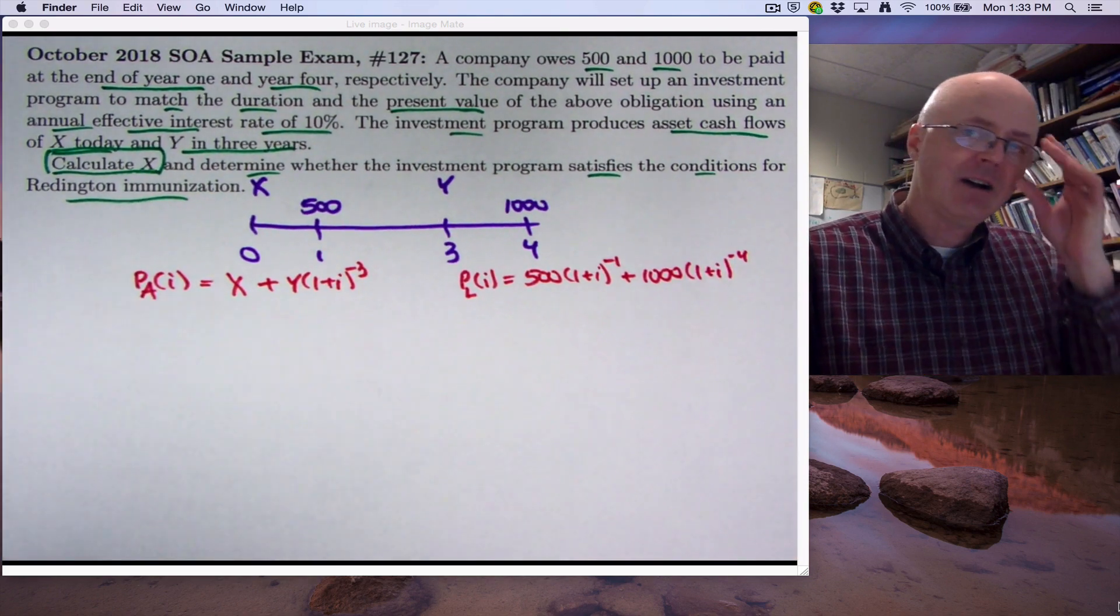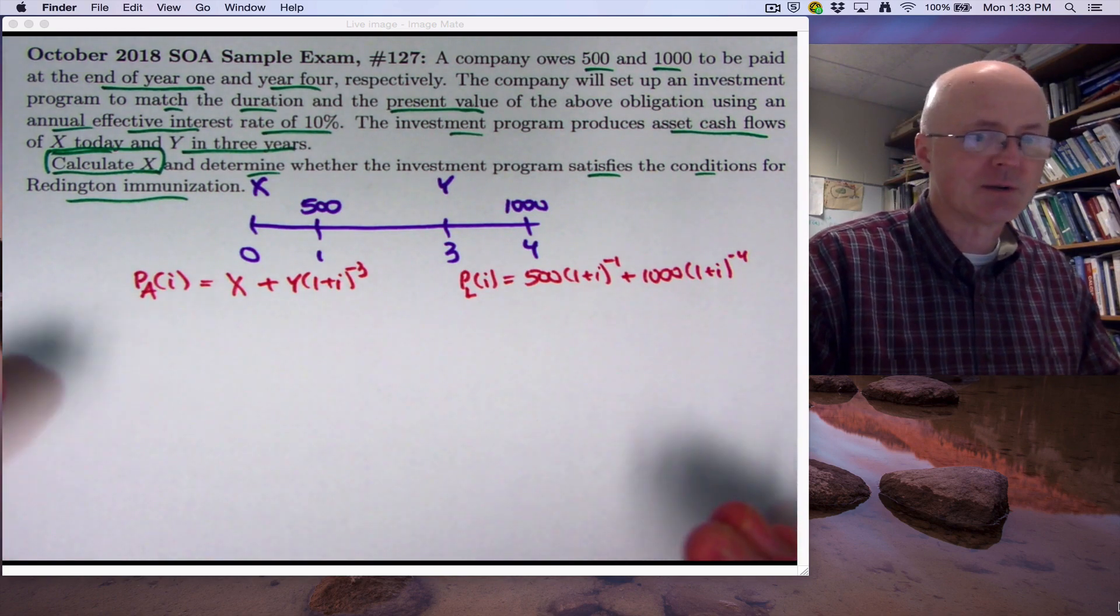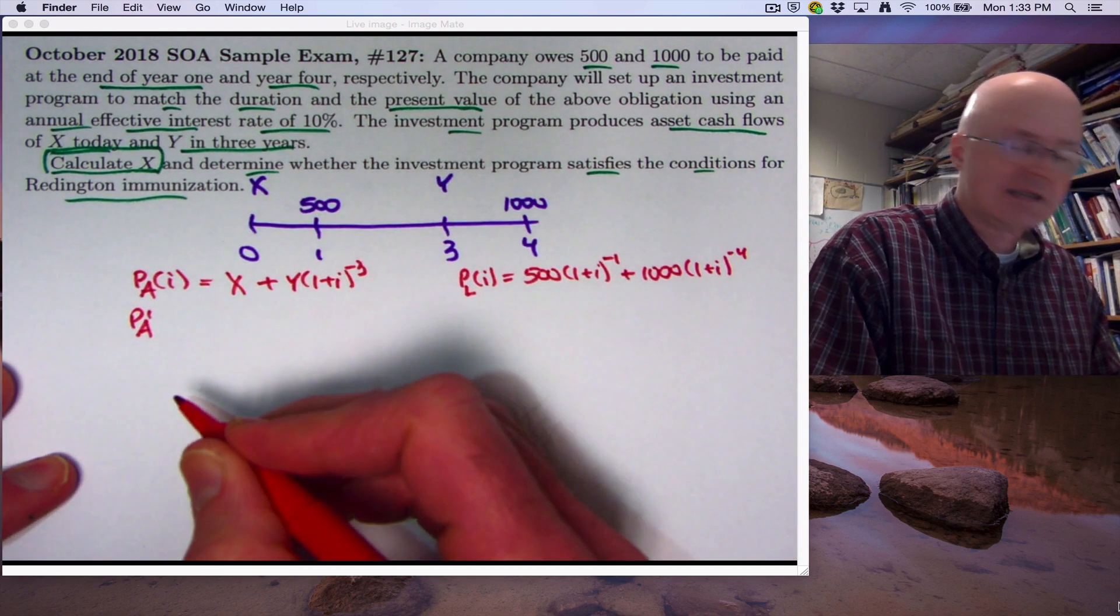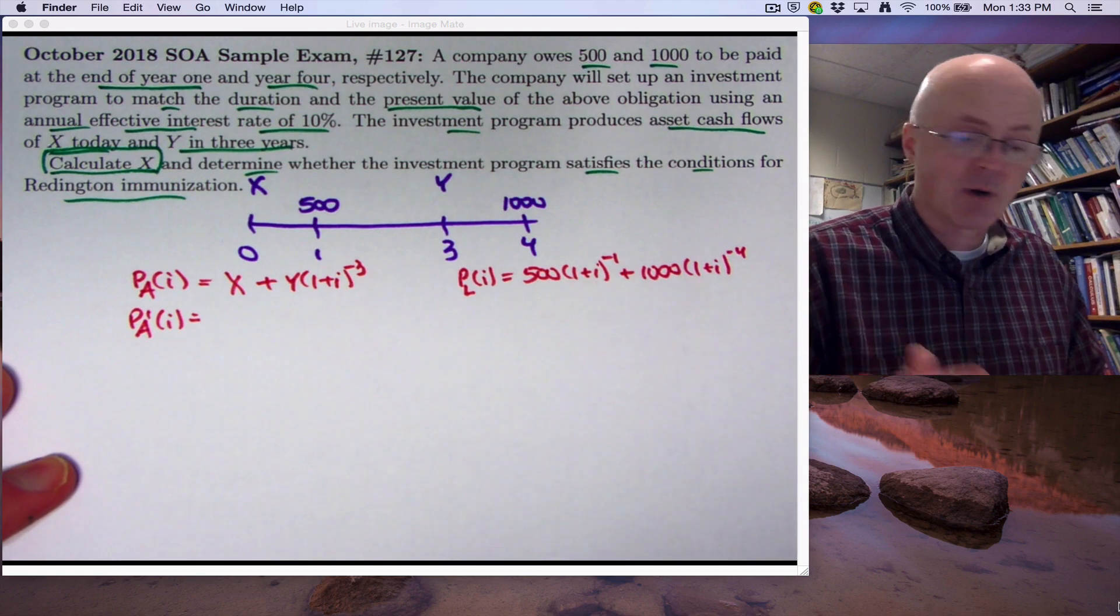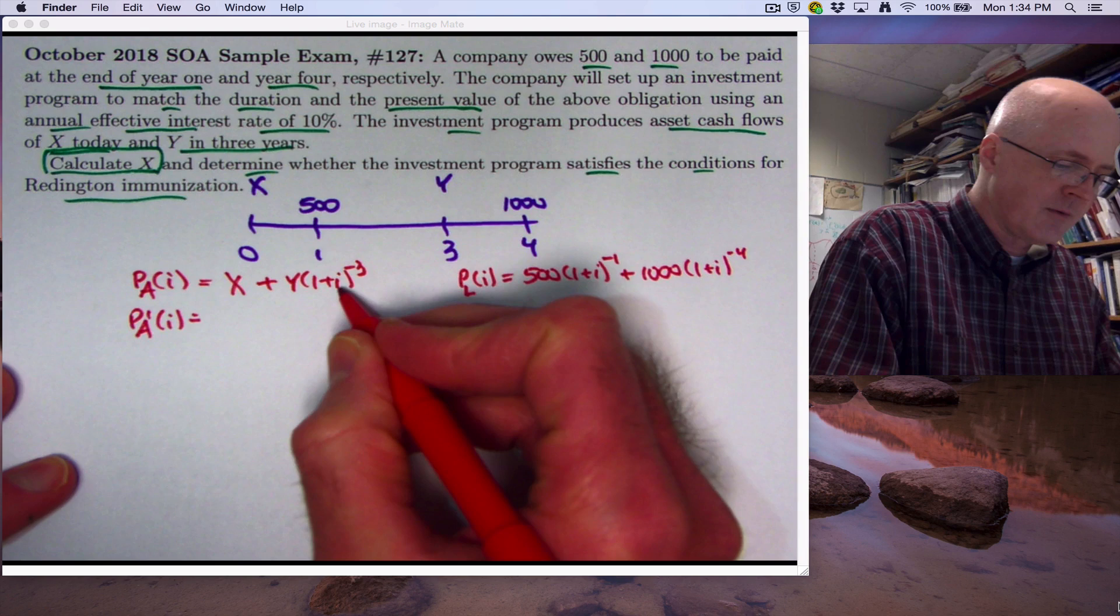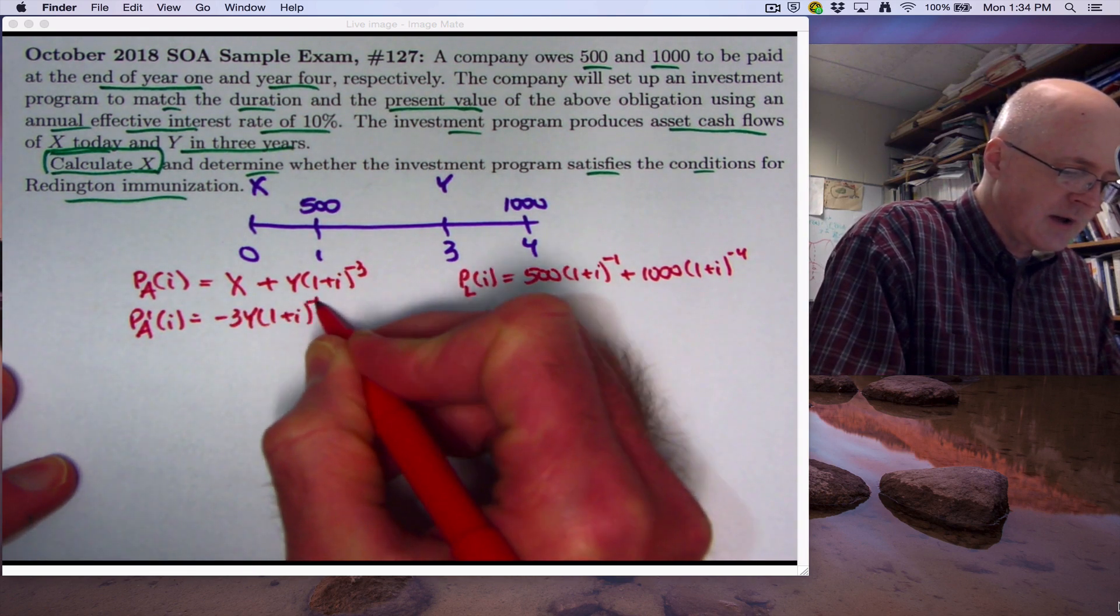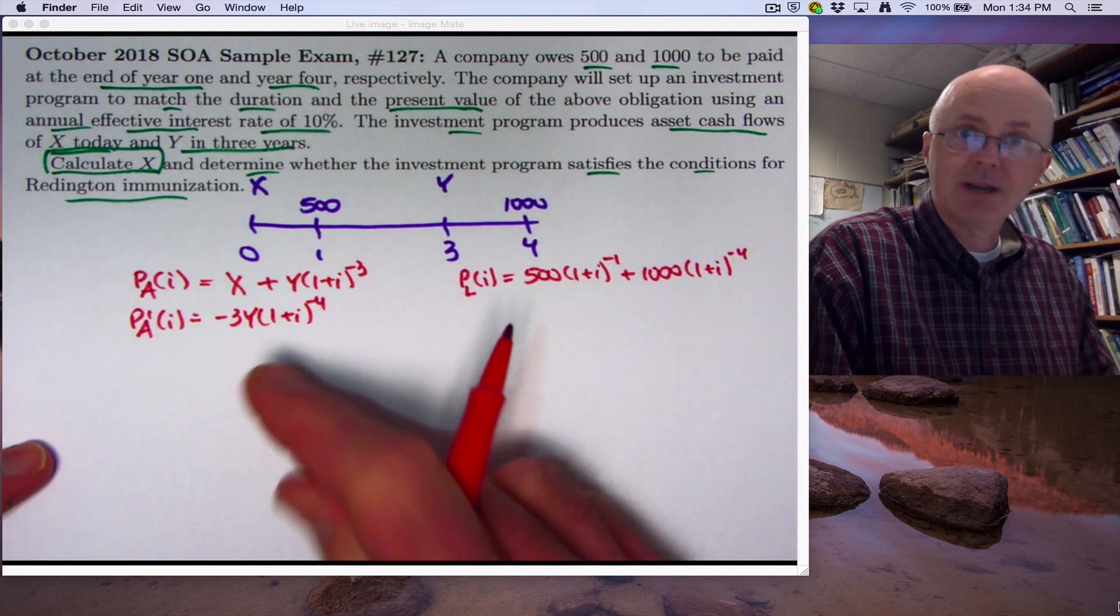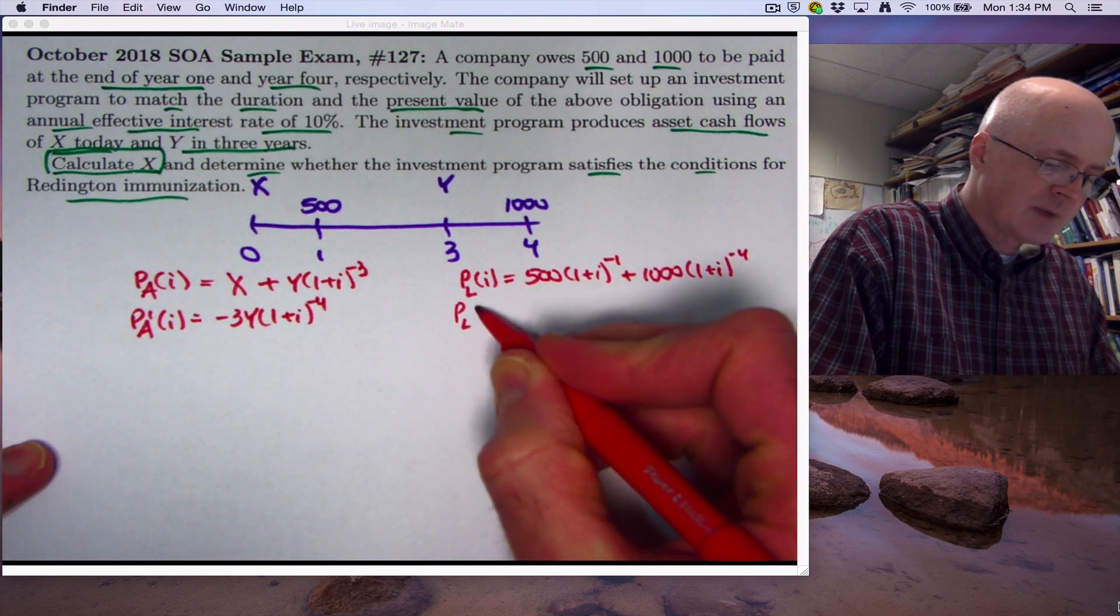And if you're trying to calculate away as fast as you can to solve the problems as fast as you can, probably the first thing to do is at least take the first derivatives here. And then if you see, oh, I need to check to see if Reddington immunization is satisfied or not, then you'd also know you'd for sure want to take the second derivatives. x is a constant with respect to i, its derivative is zero. Differentiate this, the negative three will come down and become a negative four. Of course, technically speaking, you also multiply times the derivative of one plus i because of the chain rule, but that derivative is one, so you don't have to write it down.